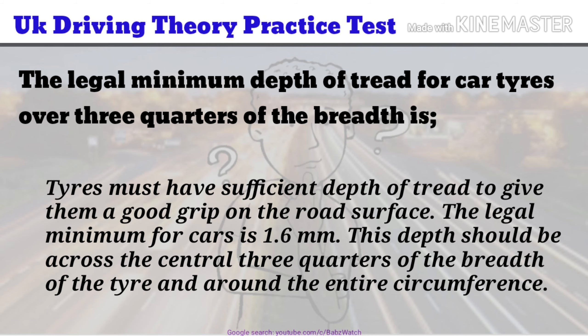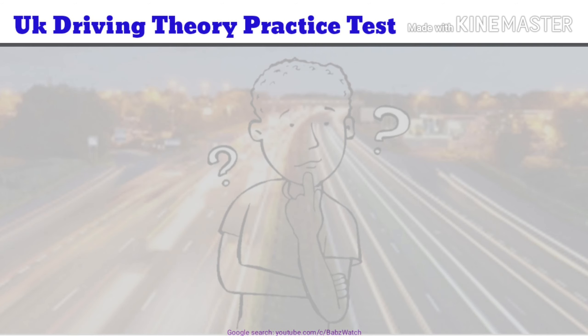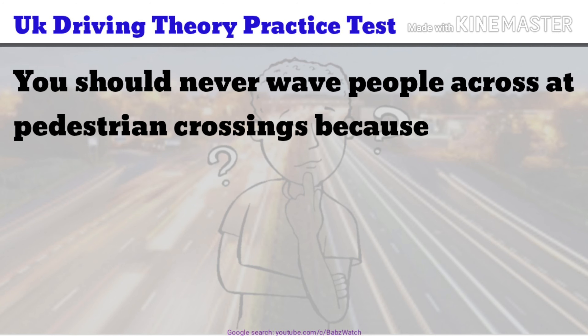Tyres must have sufficient depth of tread to give them a good grip on the road surface. The legal minimum for cars is 1.6 mm. This depth should be across the central three-quarters of the breadth of the tyre and around the entire circumference.